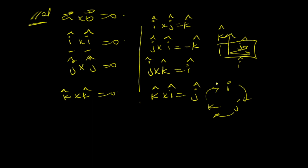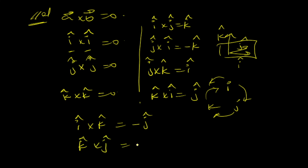Completing the cyclic form: k-cap cross i-cap equals j-cap. If you do the cross product in the opposite direction: i-cap cross k-cap gives minus j-cap, k-cap cross j-cap gives minus i-cap, and j-cap cross i-cap gives minus k-cap.